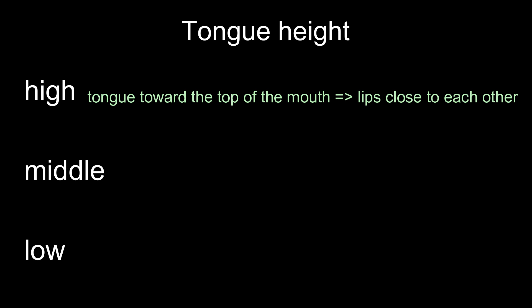The high position means that the tongue is raised toward the top of the mouth. Mechanically speaking, to raise the tongue, the lips will have to be close to each other. Vowels that are produced high are E, I, U, and U. We call these four vowels high vowels.